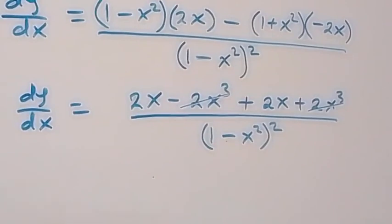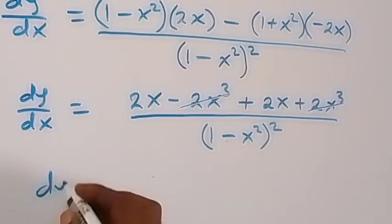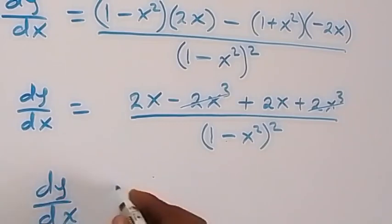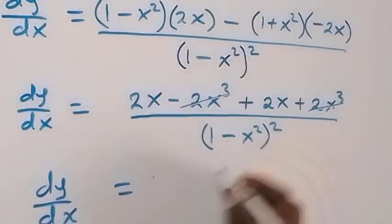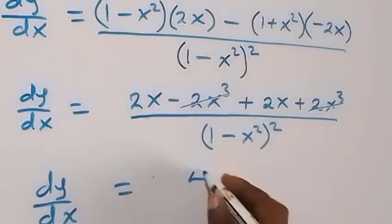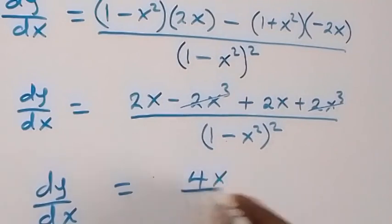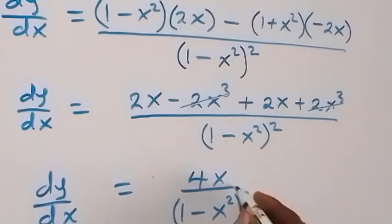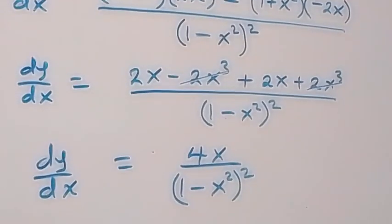What's left is 2x plus 2x, which gives us 4x, over (1 minus x squared) all squared. So, dy/dx equals 4x over (1 minus x squared) squared, and this is the derivative of the function y given.